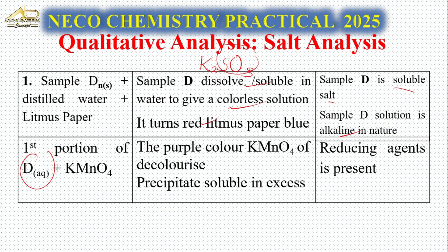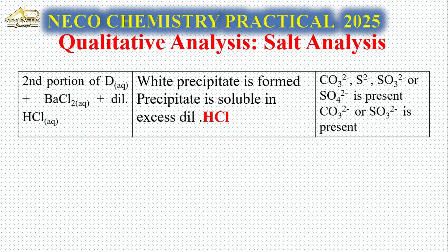Salt D solution plus KMnO₄: the purple color of KMnO₄ decolorizes. This means SO₃²⁻ is a reducing agent. This is an important observation for confirming sulfite.